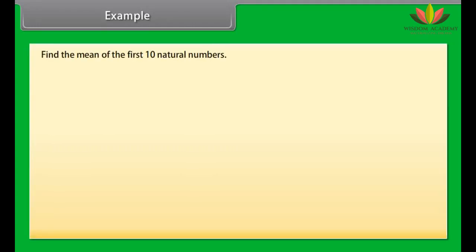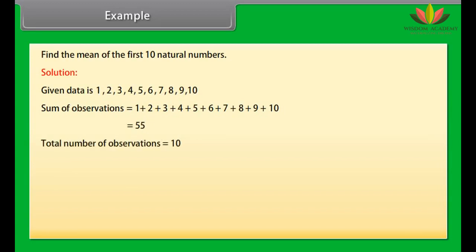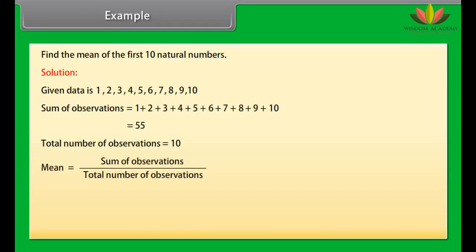Example: Find the mean of the first 10 natural numbers. Solution: The given data is 1, 2, 3, 4, 5, 6, 7, 8, 9, 10. The sum of observations equals 1+2+3+4+5+6+7+8+9+10 = 55. Total number of observations equals 10. Mean equals sum of observations divided by total number of observations, which equals 55 divided by 10, equals 5.5.